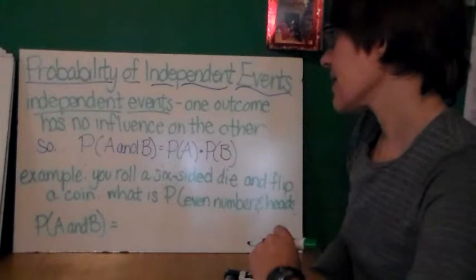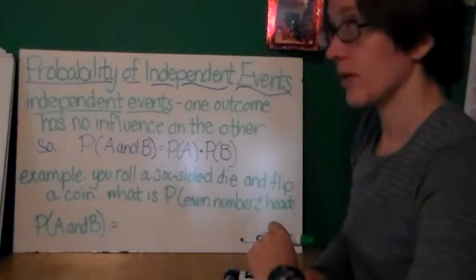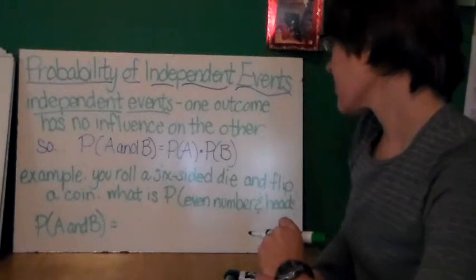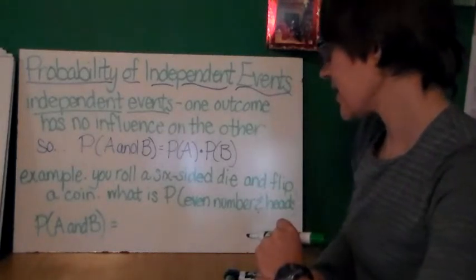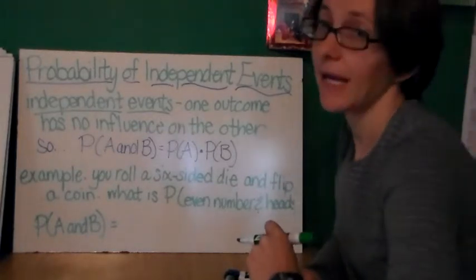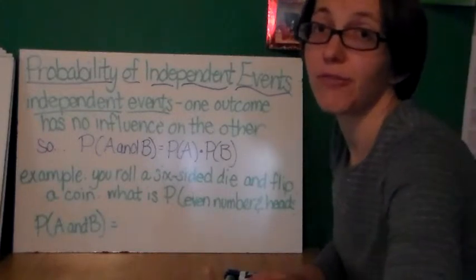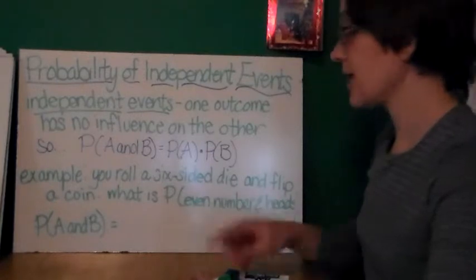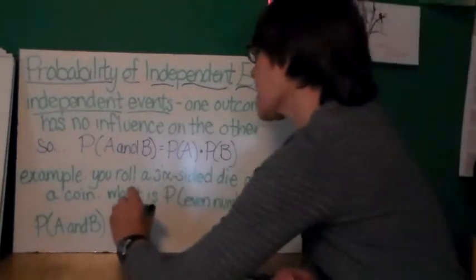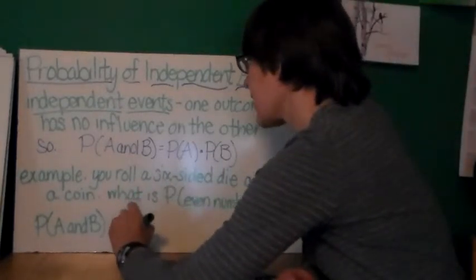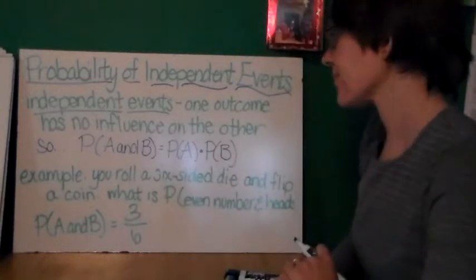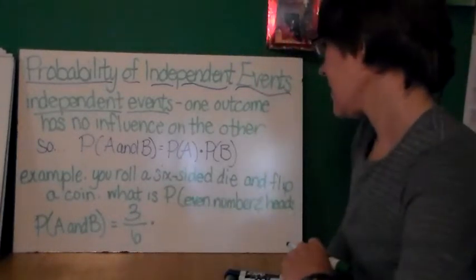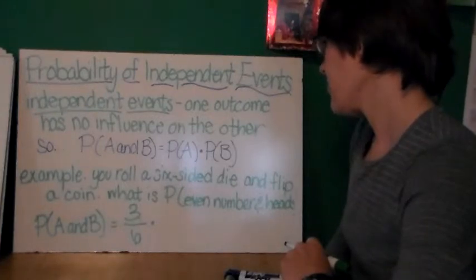For example, let's say that I roll a six-sided die, numbers one through six, and I flip a coin. What is the probability that I get an even number and I get heads? We are going to assume a fair die and a fair coin for this problem. So first, even number, that's two, four, six. So that can occur three out of six ways.